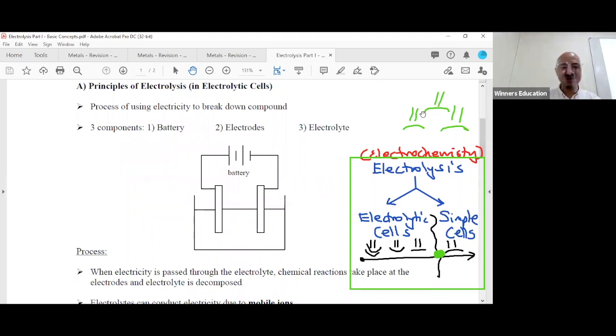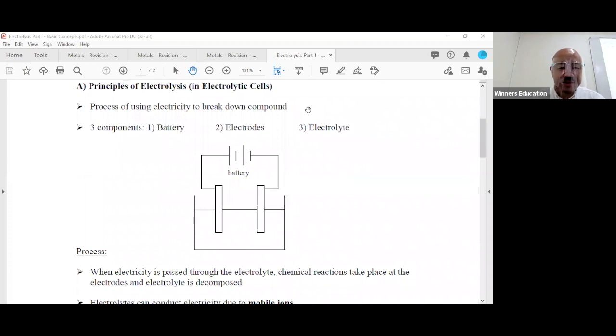This is the first of our cells, called electrolytic cells. Electrolytic cells is whereby electrolysis occurs. What is electrolysis? Electro refers to electricity, lysis is a bio term meaning breaking down. Break down what? Break down a compound. You have electricity to break down a compound.